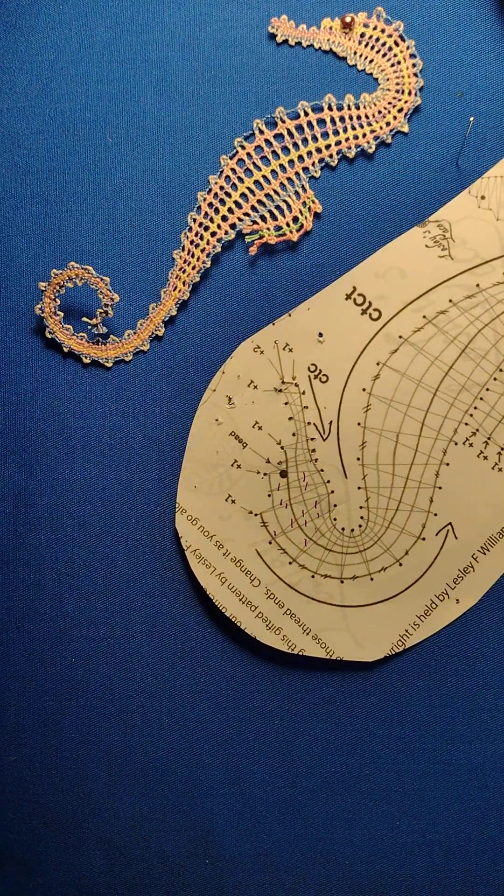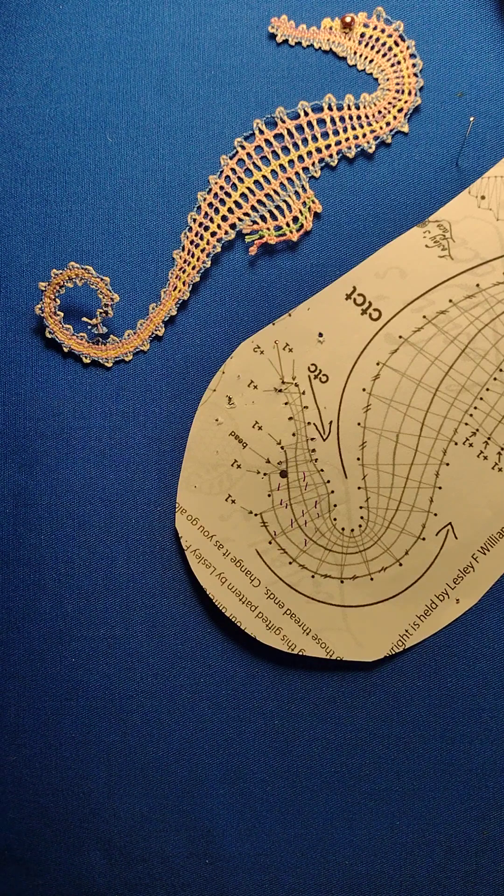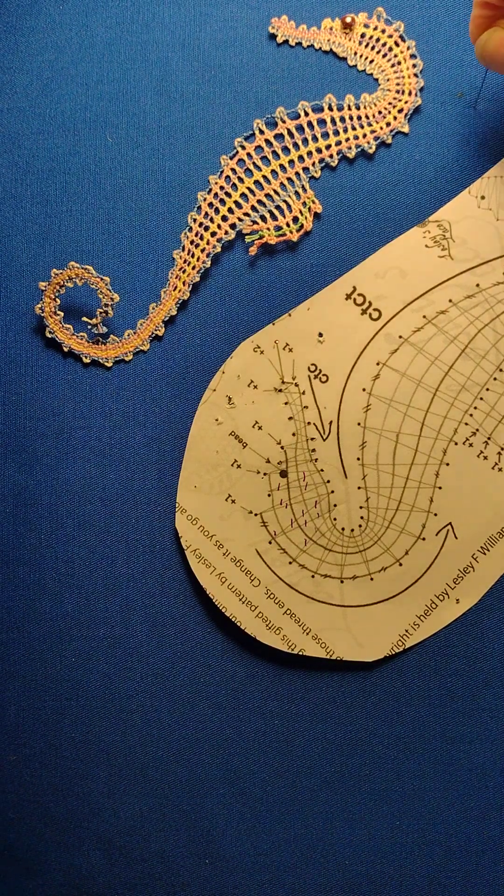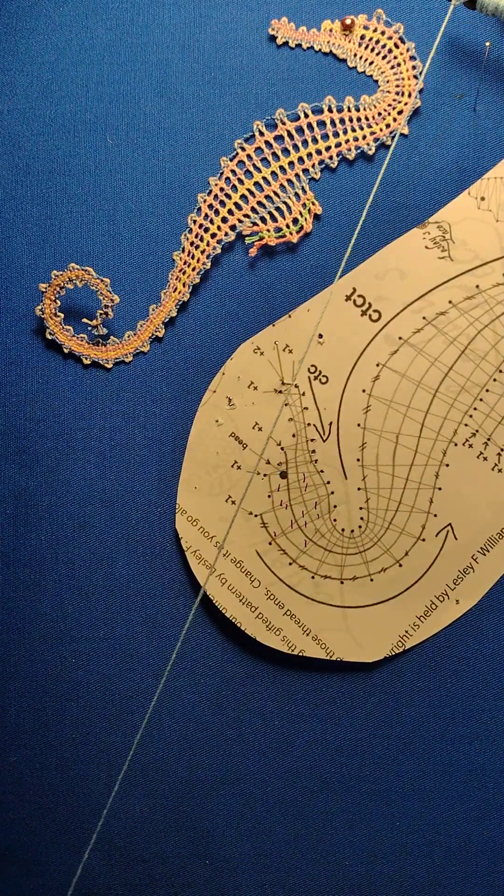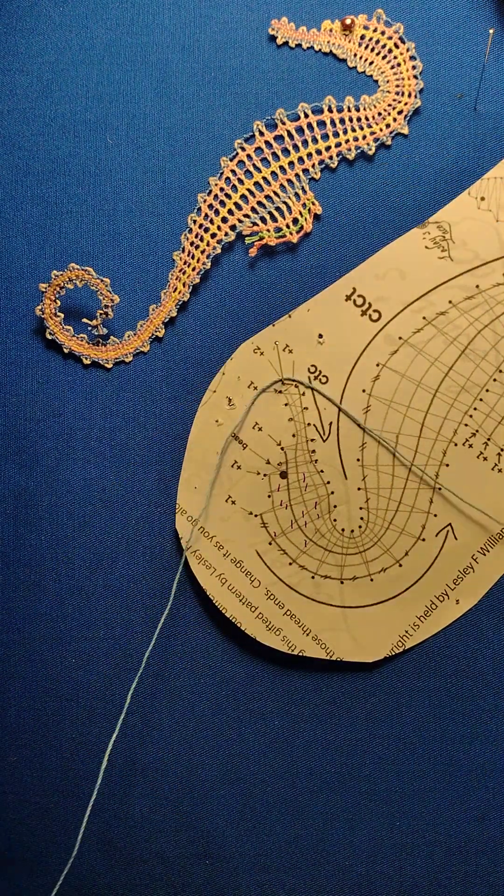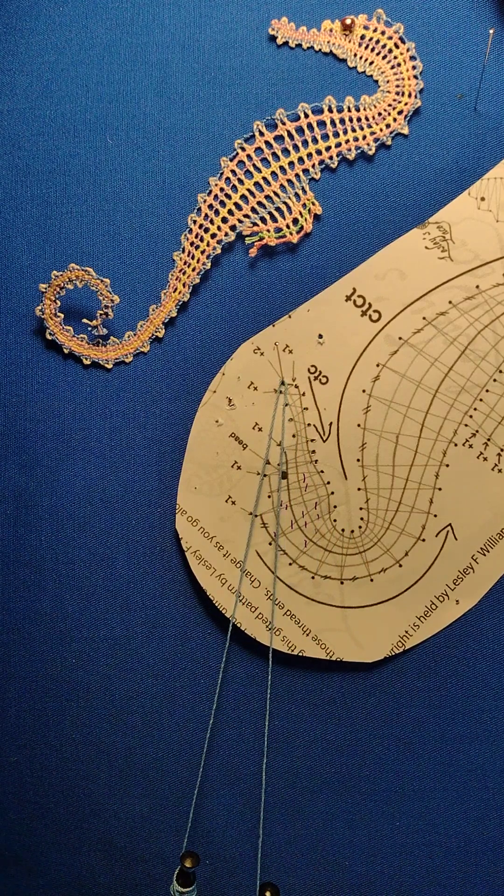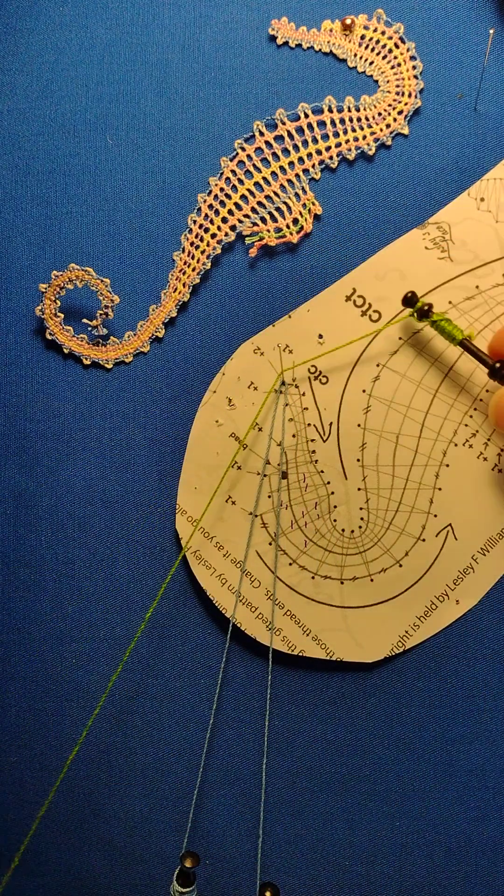Doing the plain cloth stitch. Right, first pin in the first hole where it says plus two. So your plus two is going to be your worker pair which wants a lot on and one of the passives which doesn't need as much on.